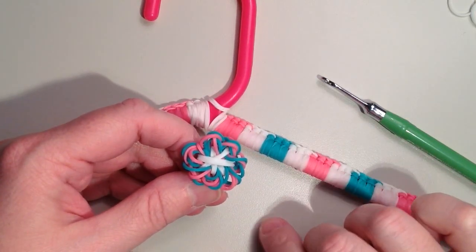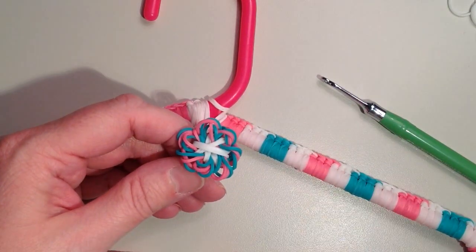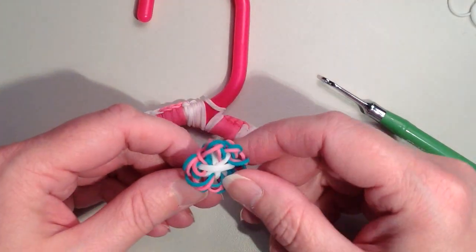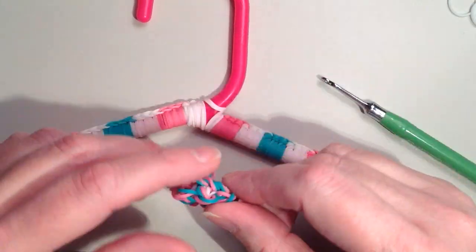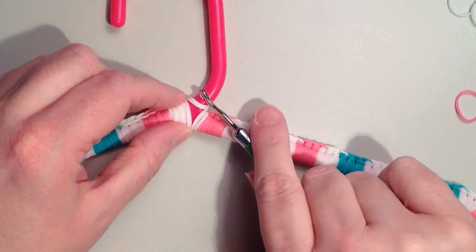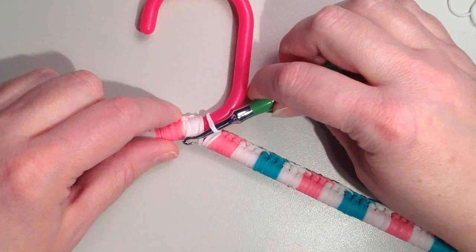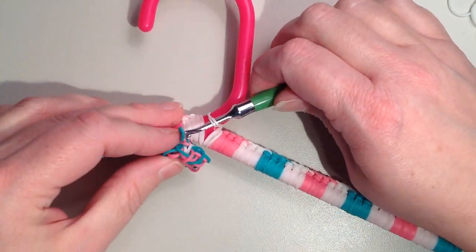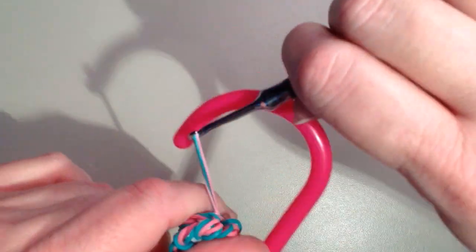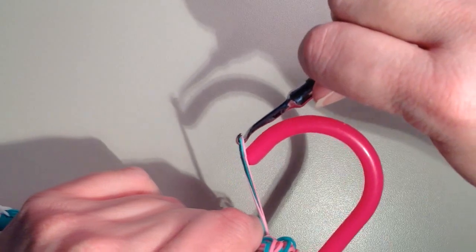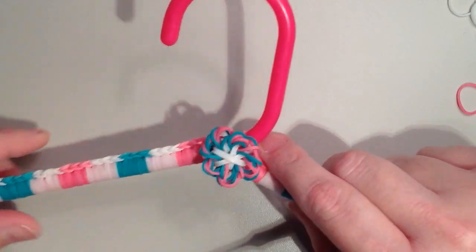So at the end you're left with these two loops here. So we're just going to put this around. What I'm actually going to do is go underneath these two first, just to make it a little bit more secure. Put my hook under here. And then I'll grab these two loops that are left over from the flower. Pull it up through and then again it's a bit of a stretch here, but I'm just going to pull this up and over. Just give it a little bit more stability on there.